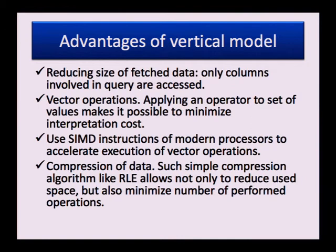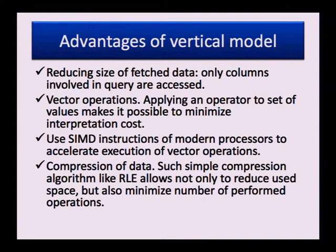The last advantage of the vertical model is compression of data. Compression can also be done for horizontal representation, but compression is based on redundancy and irregularities in input data. If we deal with each attribute independently, we can achieve much better compression ratio. Even a simple algorithm like run-length encoding allows significantly reducing memory footprint, especially if there are many duplicate values.